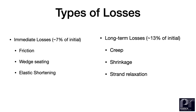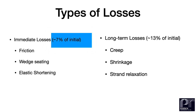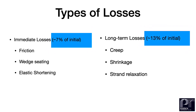In our design practice, losses can be computed as a lump sum or a percentage of the initial stressing force. As a guideline for a bonded tendon system, immediate loss is about seven percent of the initial jacking stress, and total loss can be up to twenty percent of the initial jacking stress.